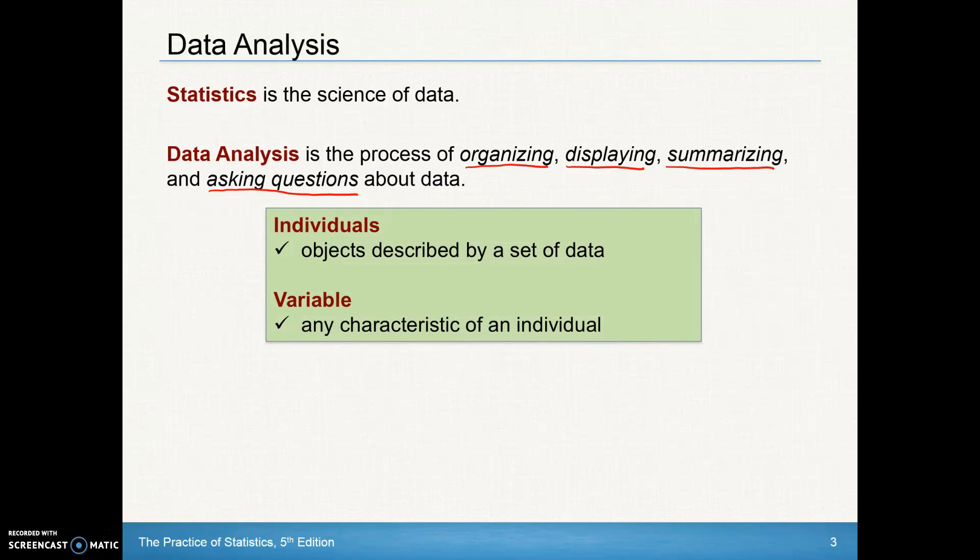We'll start off with a couple of vocabulary words. Individuals are simply the objects being described by a data set. A variable is a characteristic about that individual. For example, collecting data on sophomores at Adina High School - those would be the individuals. The variable might be something that varies like hair color or height.